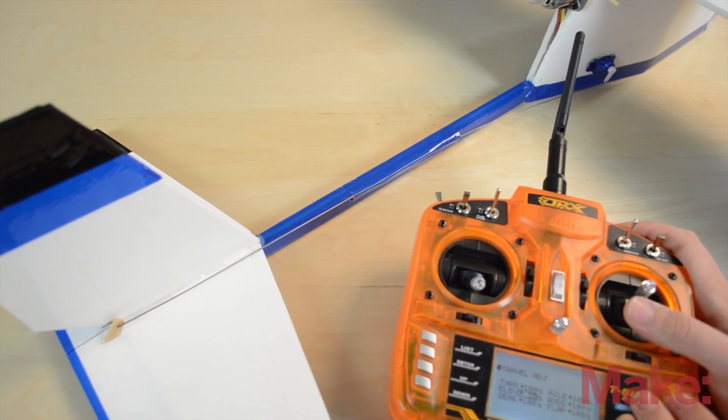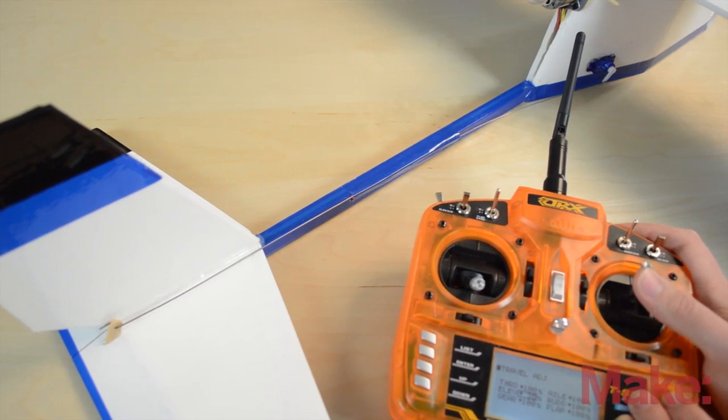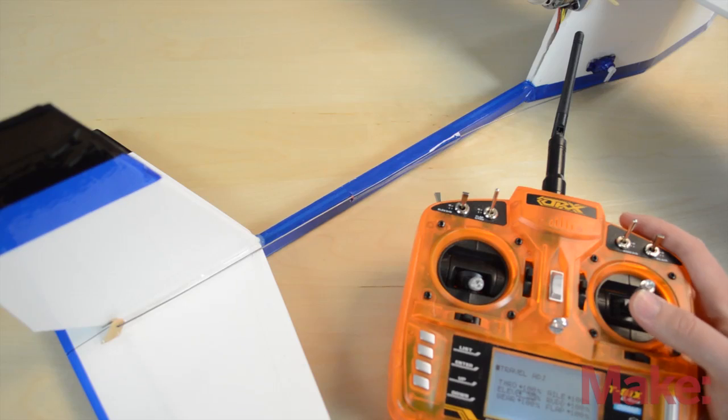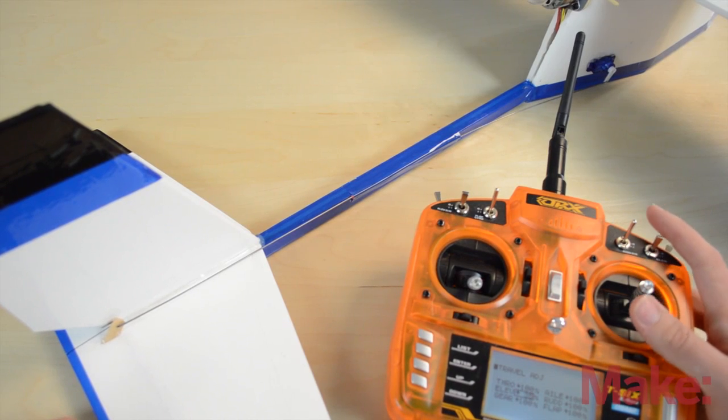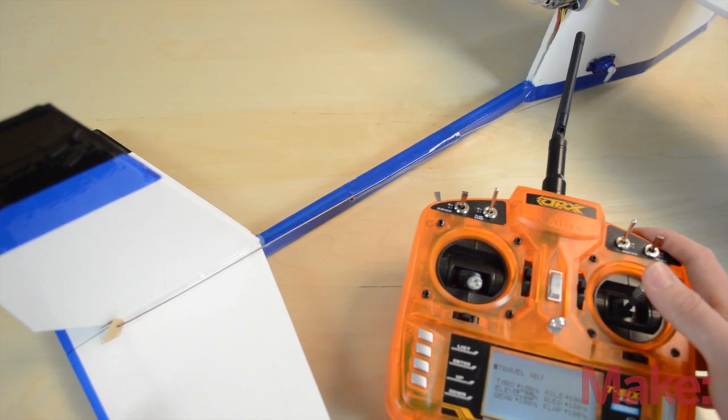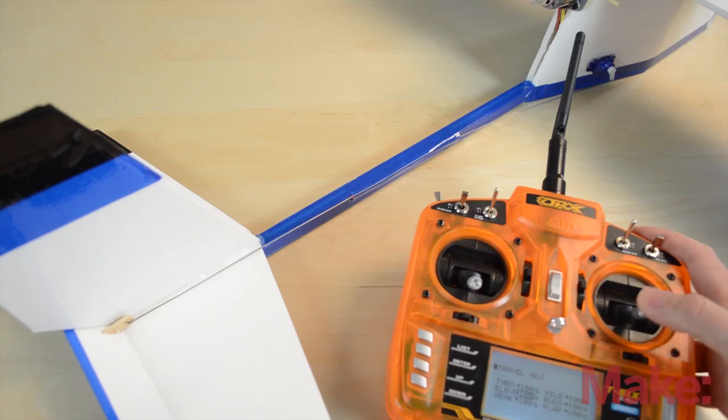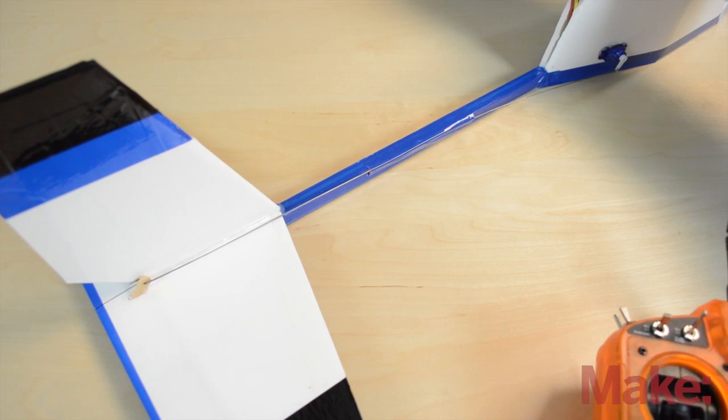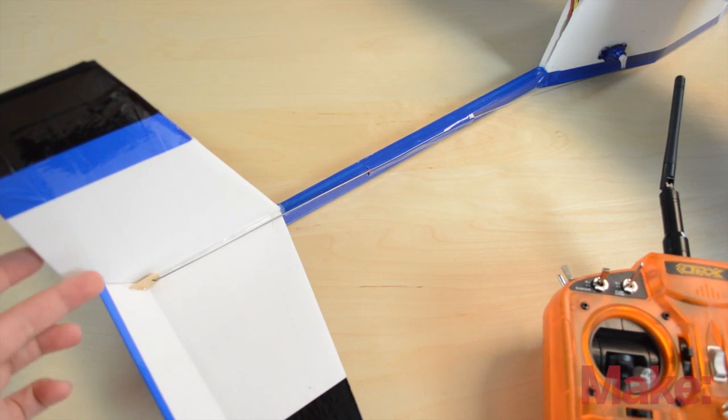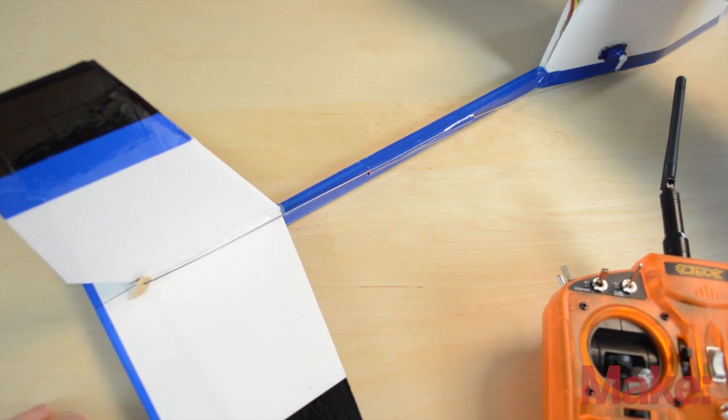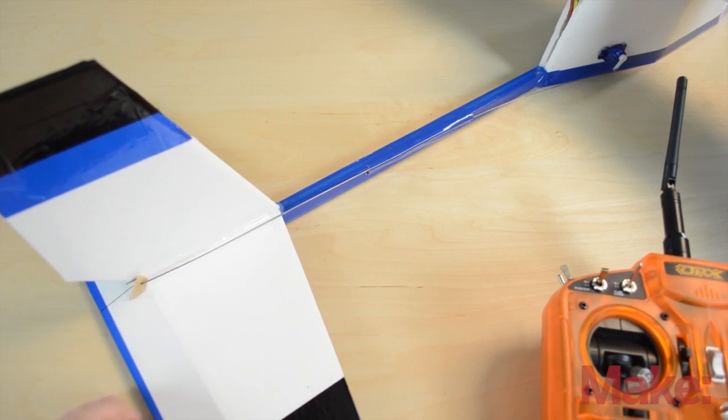That's about 35 percent. We still want to have some throw on the down elevator, even though the plane is always trying to go down, but we definitely want much more up elevator. So now the travel has been adjusted. When I pull up it only comes to this point right here, and then when I push down it only goes to its stopping point down there.